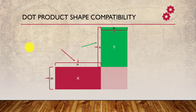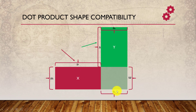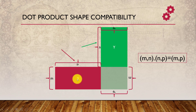If x is m×n and y is n×p, the resultant tensor will have m rows (from x) and p columns (from y). So we started with an m×n matrix, taking a dot product written as a dot, with an n×p matrix. The resultant will be the first dimension of the first matrix and the last dimension of the second matrix — that is how it is defined.